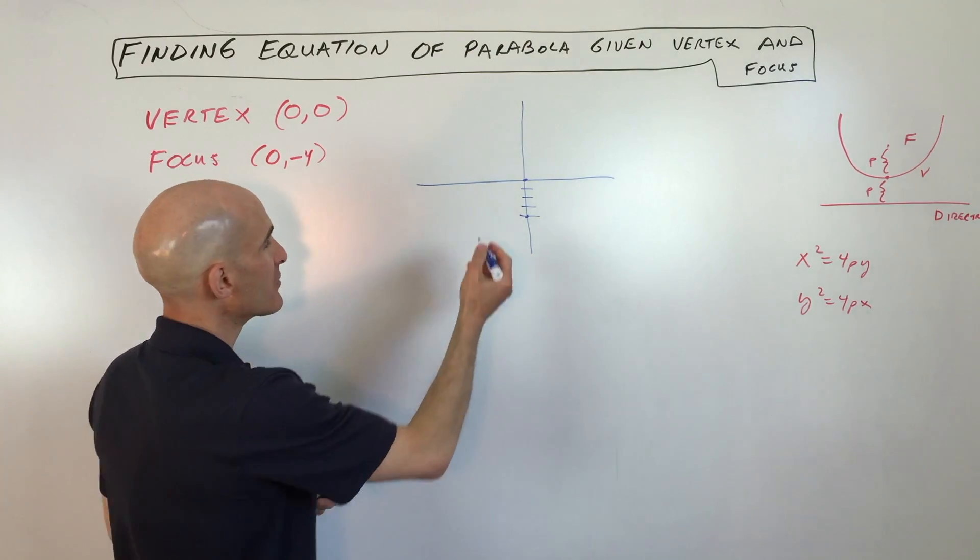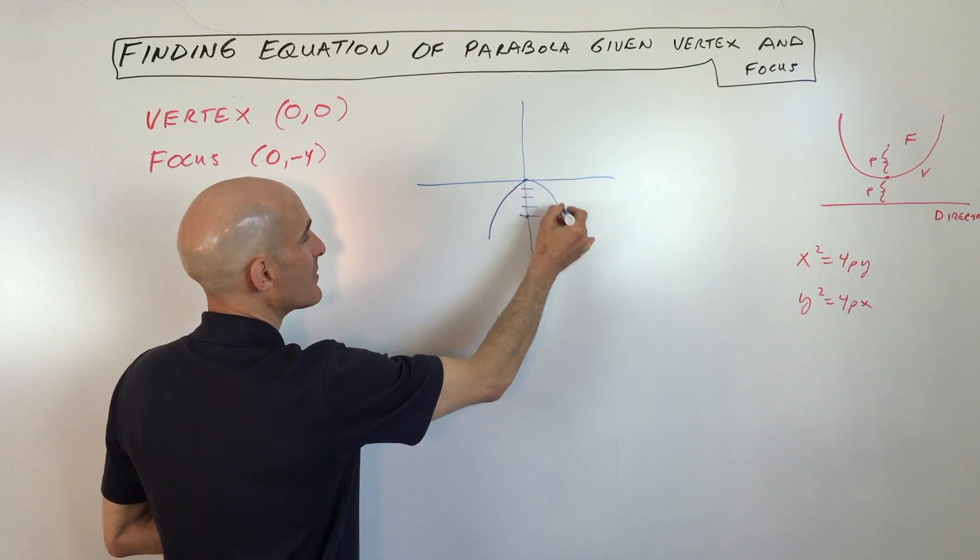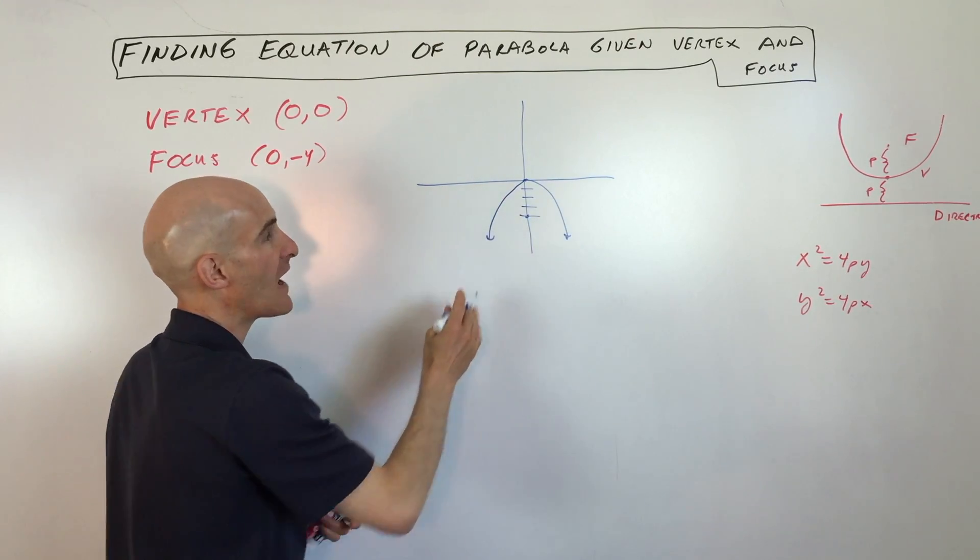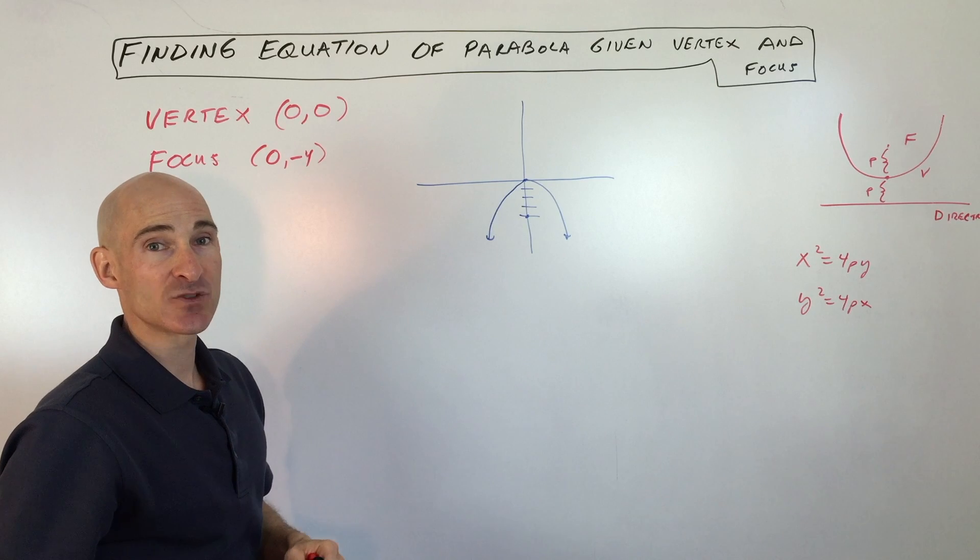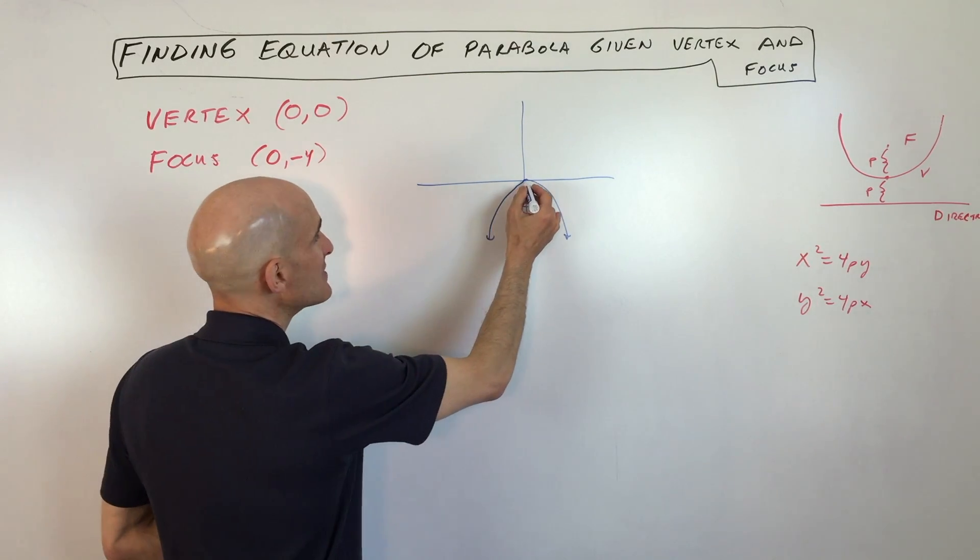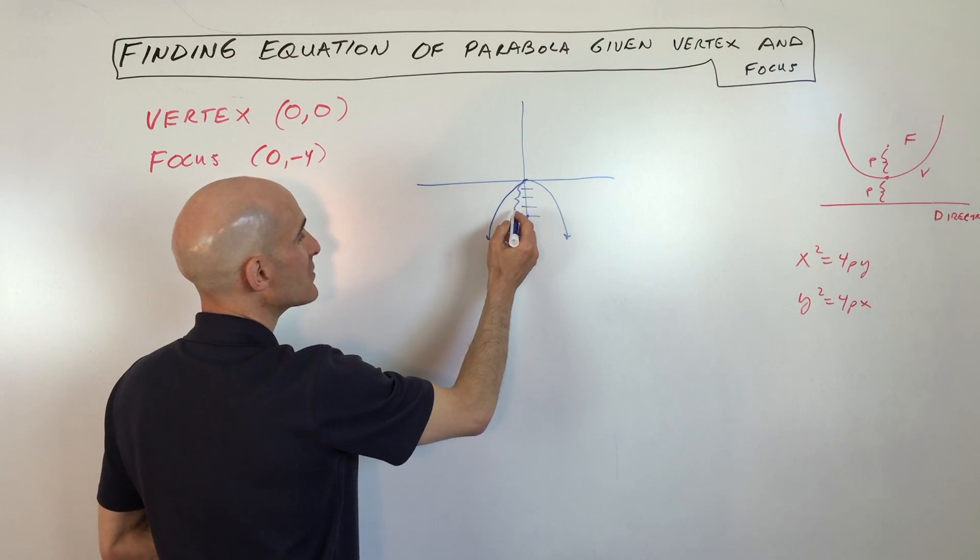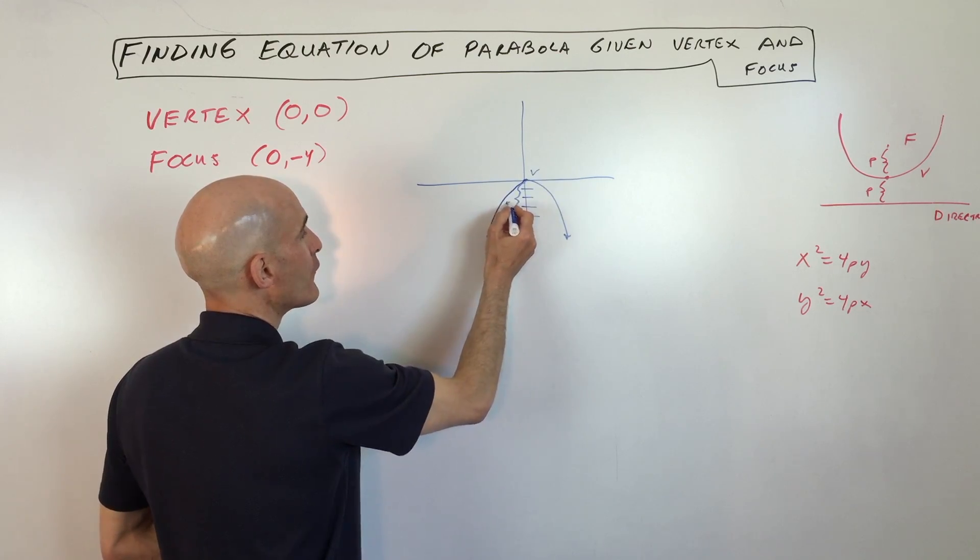So we can see here that just a rough sketch our parabola is going to look something like this. It's opening down and that tells us it's an x squared variety, and you can see this distance from the vertex to the focus, that distance is 4.